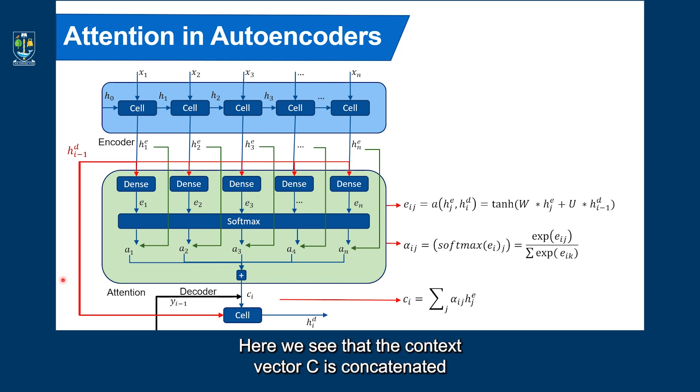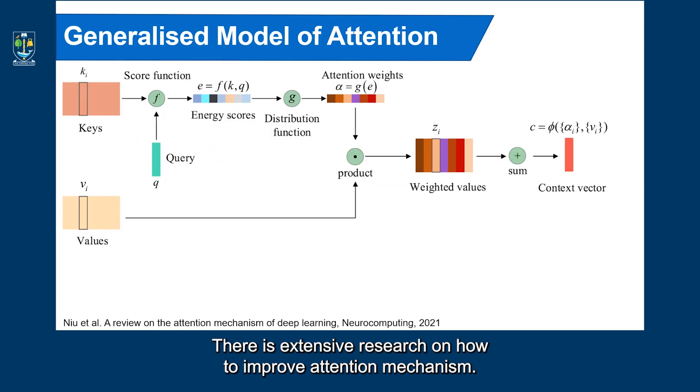Here we see that the context vector C is concatenated with the incoming data Y to form an extended vector of data into each cell of the decoder. Thus we treat the context vector as additional data to be fed into the decoder. There is extensive research on how to improve attention mechanisms.